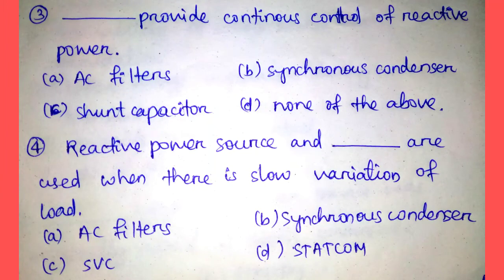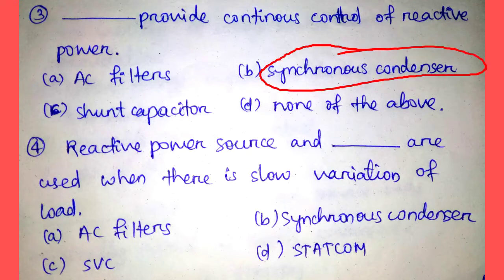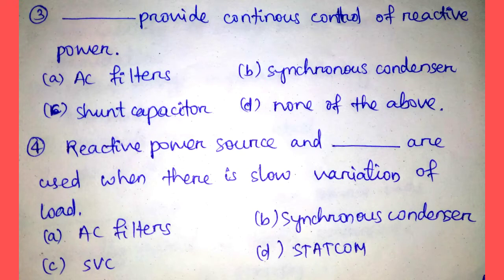So the correct answer is Option C, static capacitor. Question number three: Which provides continuous control of reactive power? Option A: AC filters, Option B: synchronous condenser, Option C: static capacitor, Option D: none of the above. The synchronous condenser provides continuous control of reactive power, hence the correct answer is Option B.